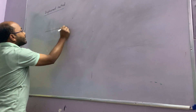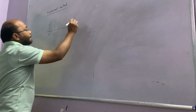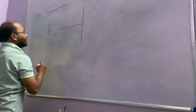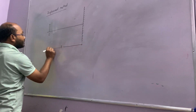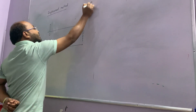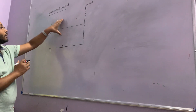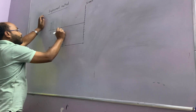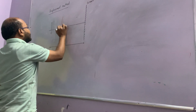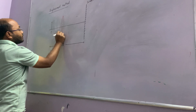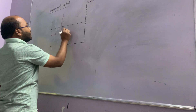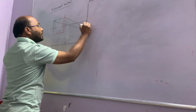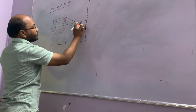Let this be an object, and this is the screen. The distance between the object and the screen is D. I want to cast an image of this object through a converging lens. Let this distance from the object to the lens is U, and this is the image formed on the screen.